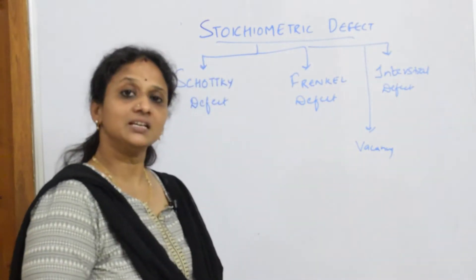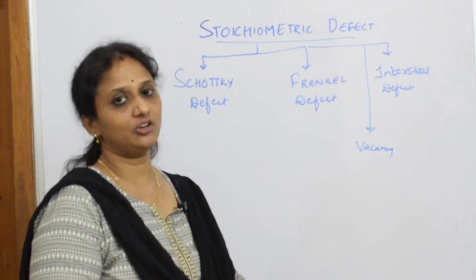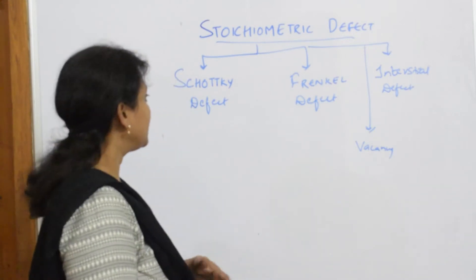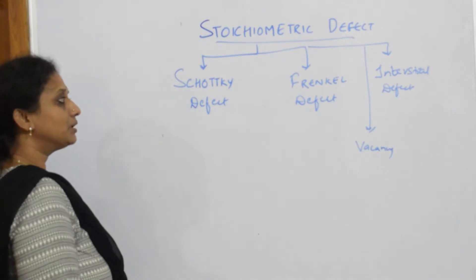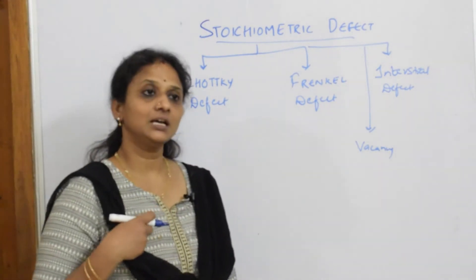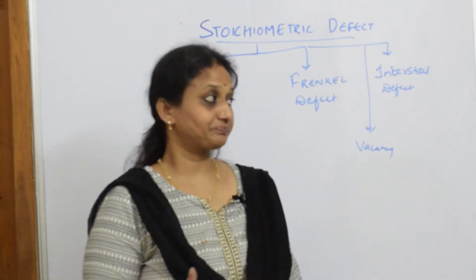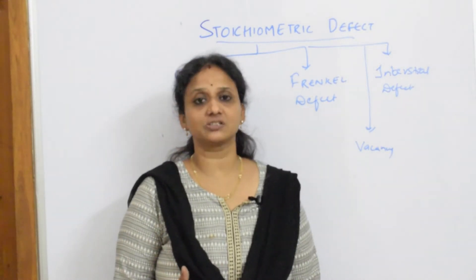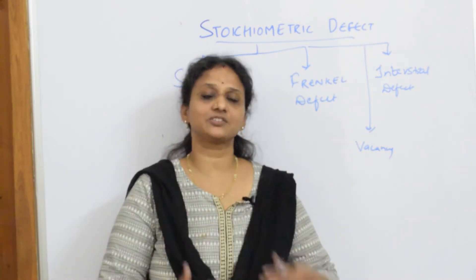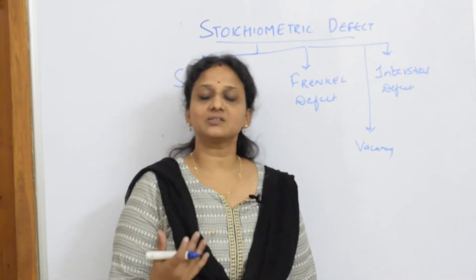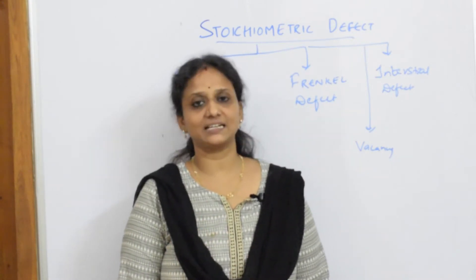Stoichiometry means equal ratio of the cation and the anion missing from the lattice site. When I speak about Schottky defect or Frenkel defect, I have to remember two important things: what are the conditions, and what are the consequences?